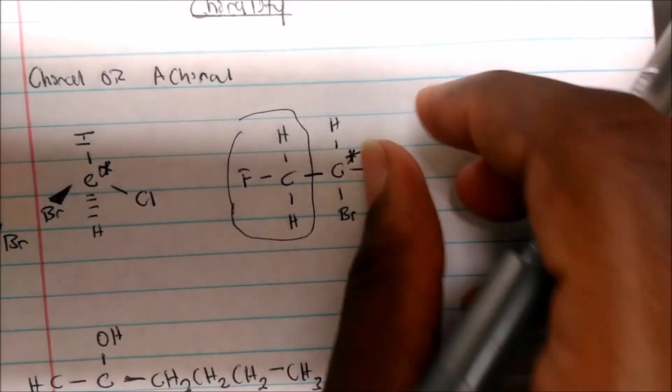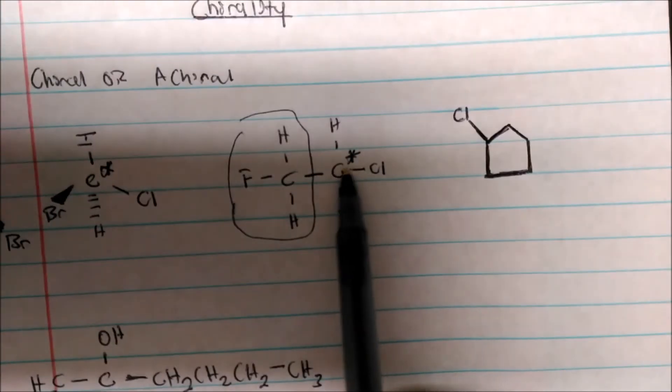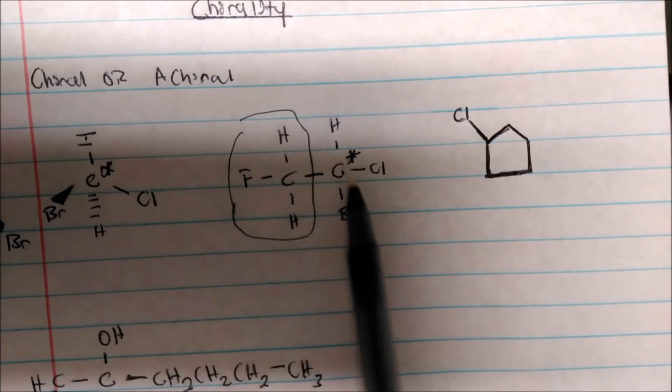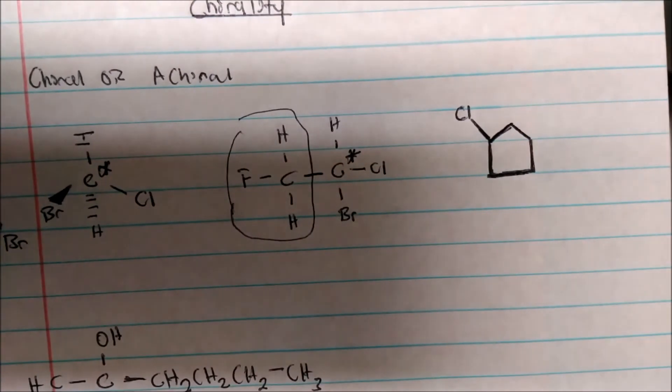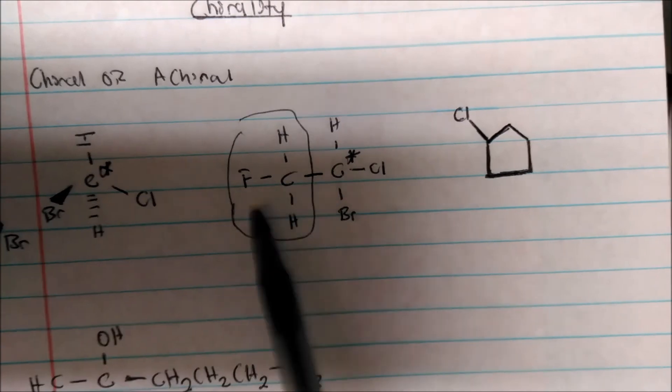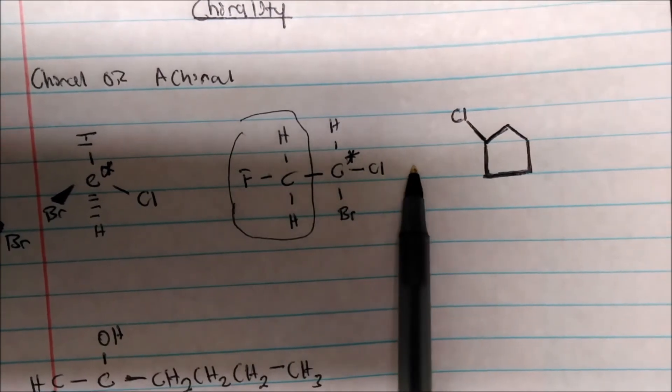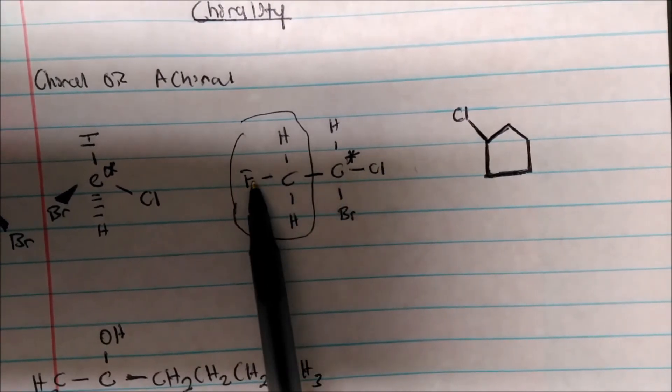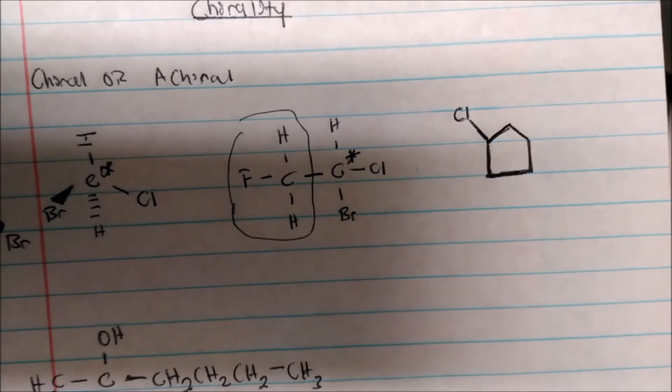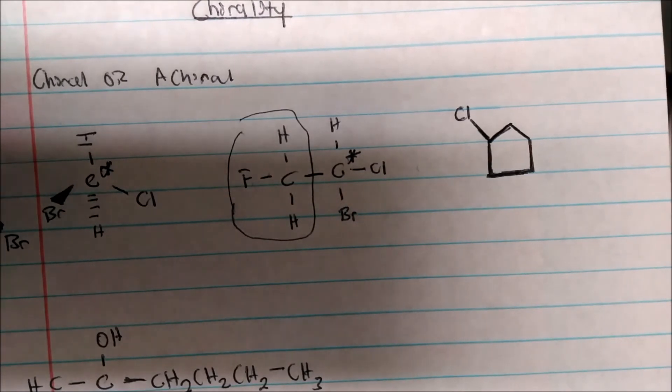So, again, this will be my chiral center, and you could just imagine this carbon having four different distinct things bonded to it, and you could just flip it. And once you flip that, there's no way having this over here and this chlorine over here now will never be the same. No matter how you rotate it, they will never be the same.